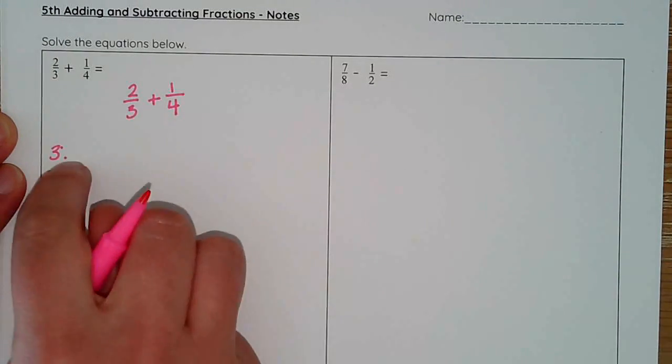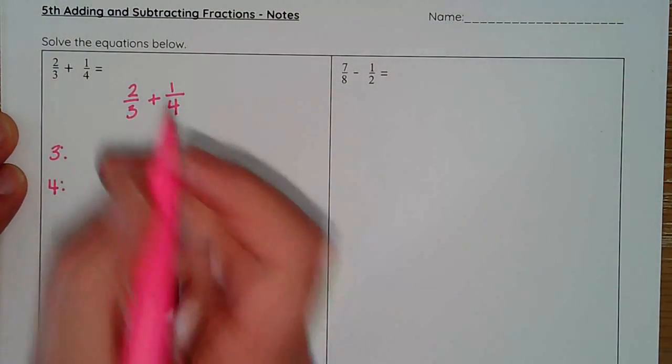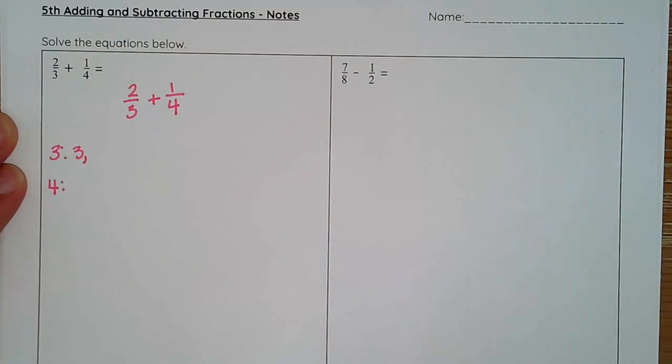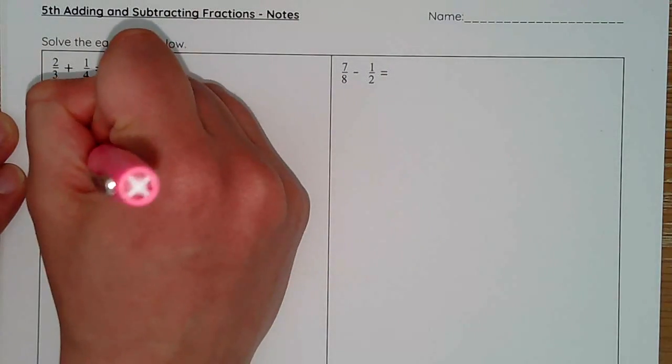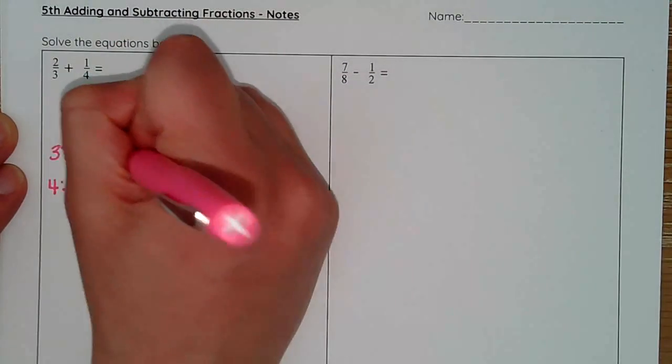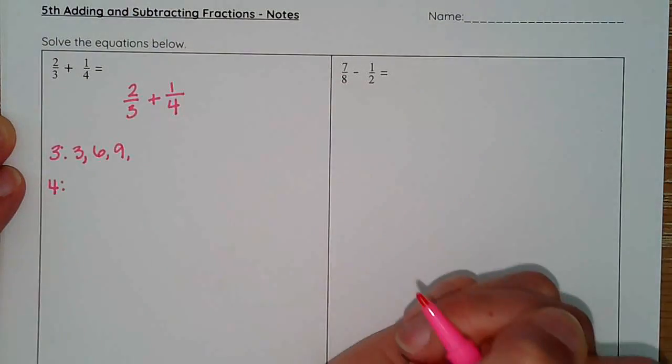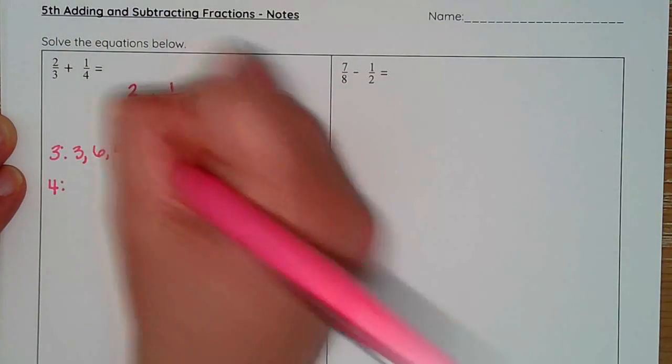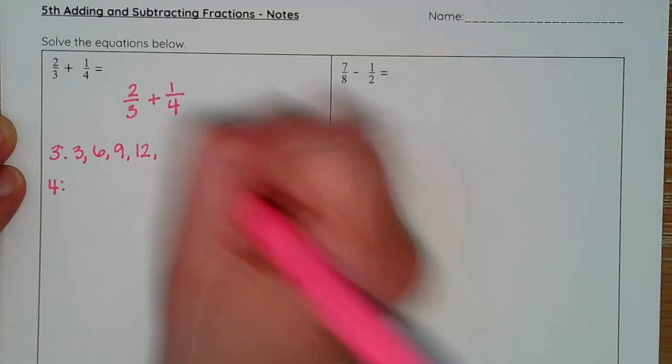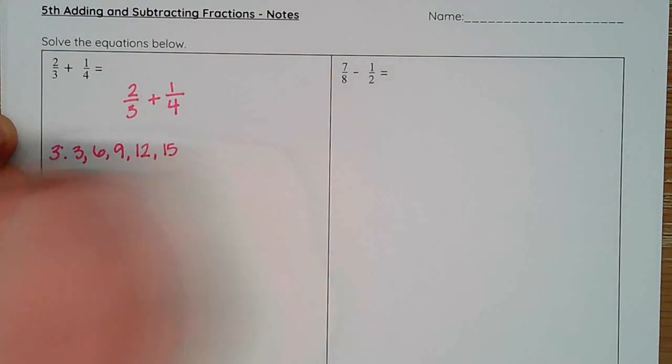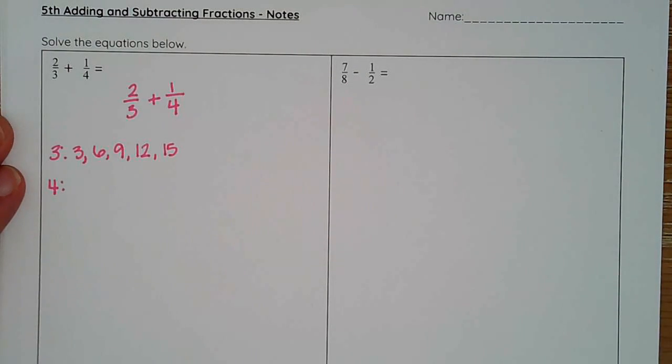So I'll start with three and four. I take my two denominators and list the multiples. Three times one is three. Three times two is six. Three times three is nine. Three times four is twelve, and three times five is fifteen. I typically like to start by going up about five just to kind of see what I've got, but you can definitely go lower as well.